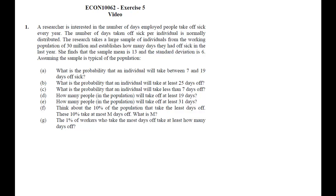In this clip I'm going to solve the questions of exercise 5. The first question is about calculating normal probabilities. The important information is that we have a random variable — the number of days someone employed takes off sick in a year. Let's call it S for sick days. We have a sample average S-bar equal to 13, and the sample standard deviation, denoted with a subscript S, is 6.